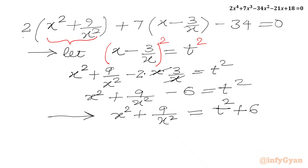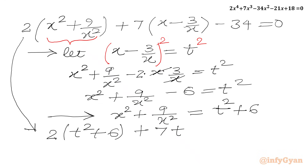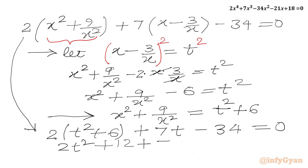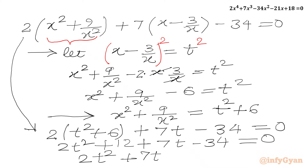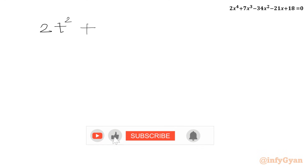Plugging in both the substitution and the expression for x² + 9/x² in terms of t, we get: 2(t² + 6) + 7t - 34 = 0, which expands to 2t² + 12 + 7t - 34 = 0. So finally we have one quadratic equation in t: 2t² + 7t - 22 = 0.